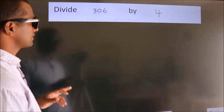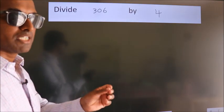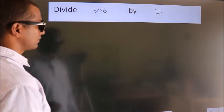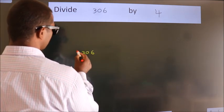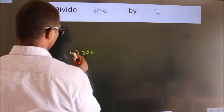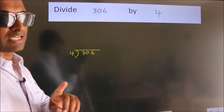Divide 306 by 4. To do this division, we should frame it in this way. 306 here, 4 here. This is step 1.